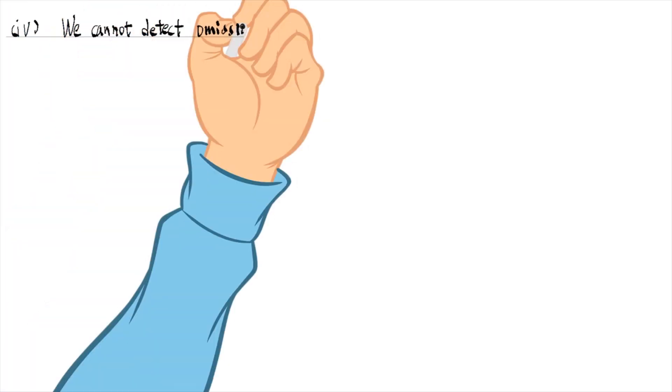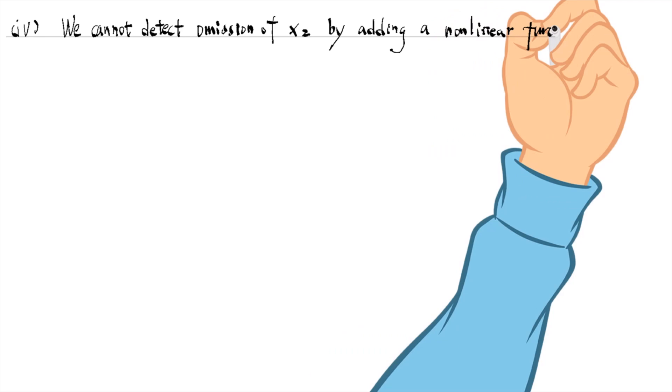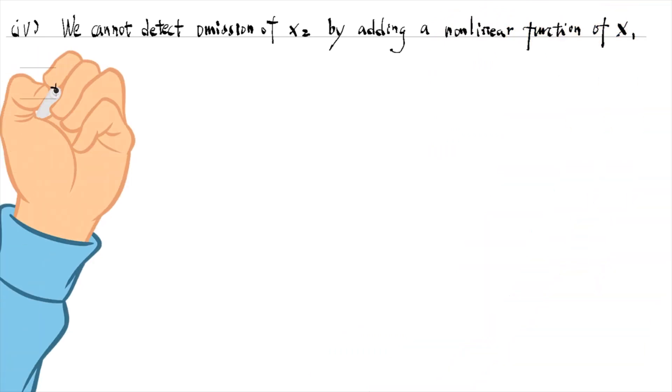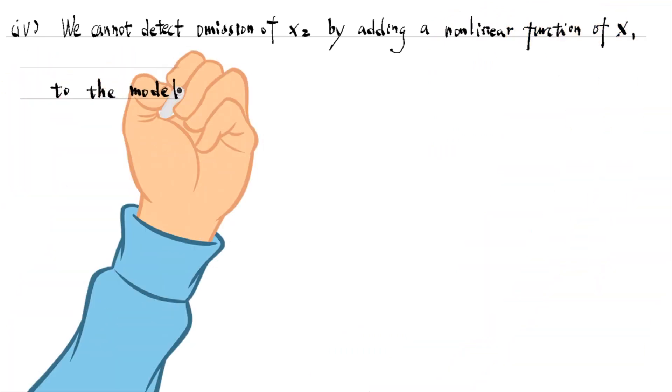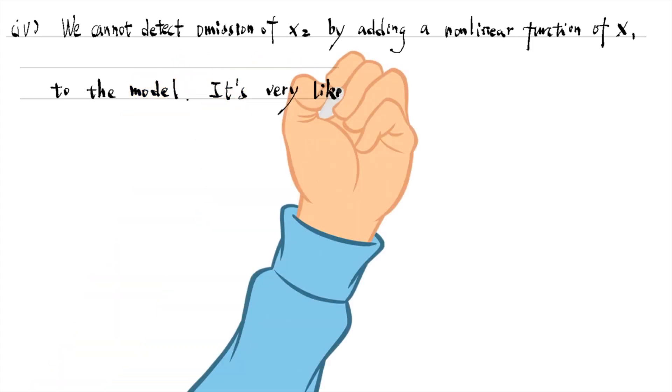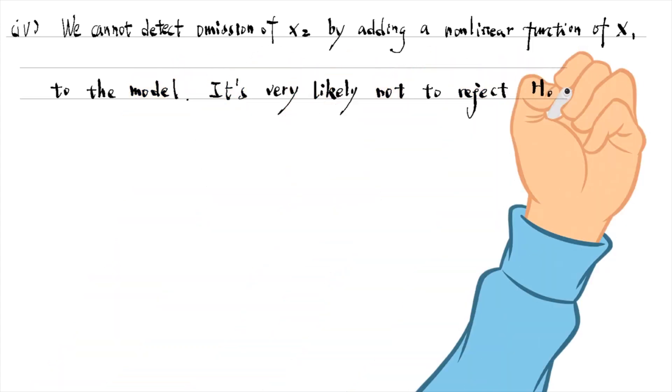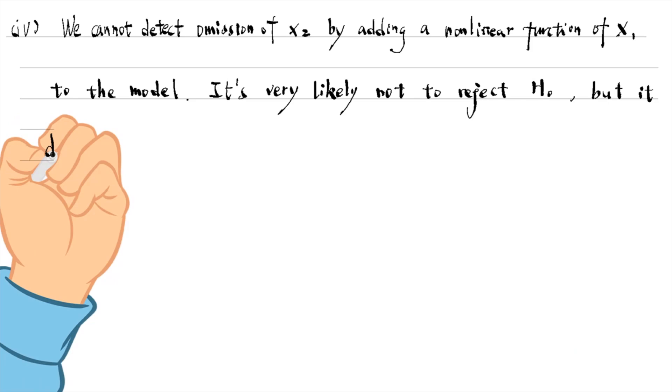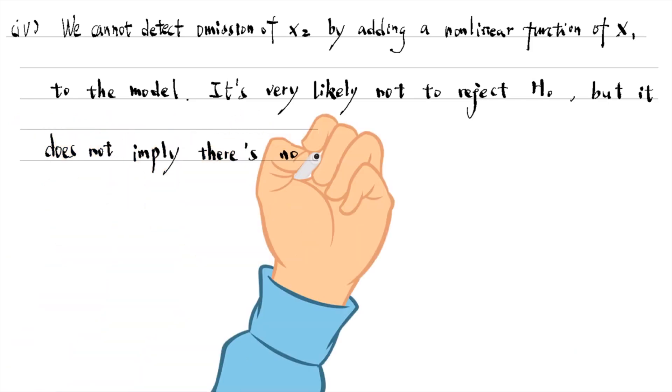For the last part, we cannot detect the omission of x2 by adding a non-linear function of x1 to the model. It is very likely not to reject the null hypothesis, but it does not imply that there is no omitted variable bias problem.